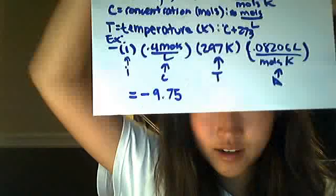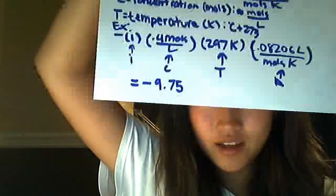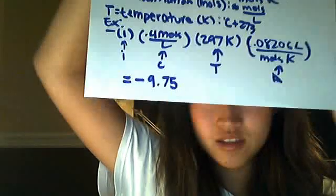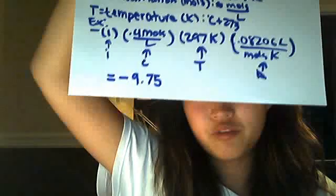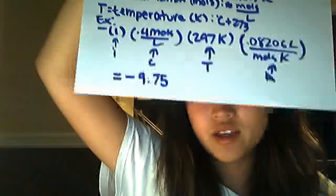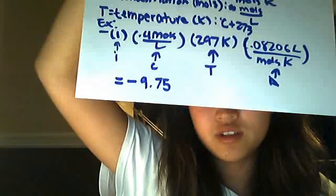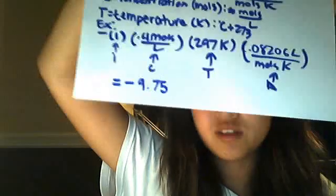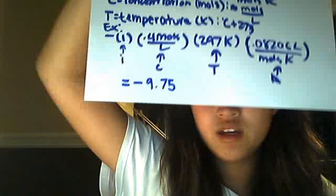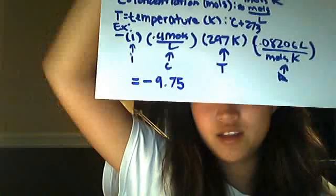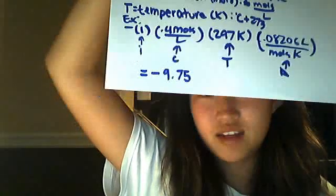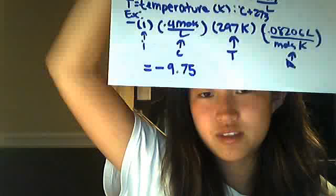The example in our lab is 0.4 molar — so that is 0.4 moles per liter — and 24 degrees Celsius, which is 297 degrees Kelvin. You multiply it all out, the units cancel, and it equals negative 9.75.